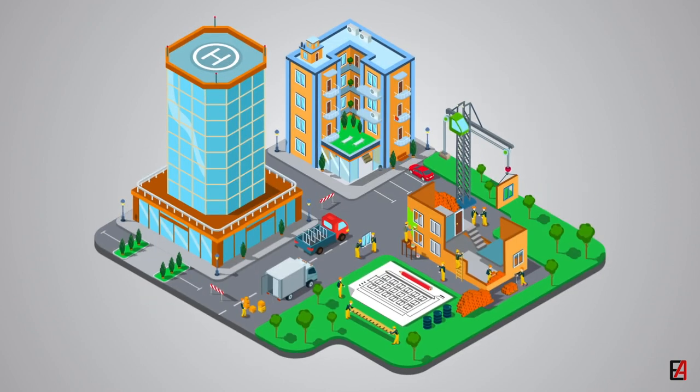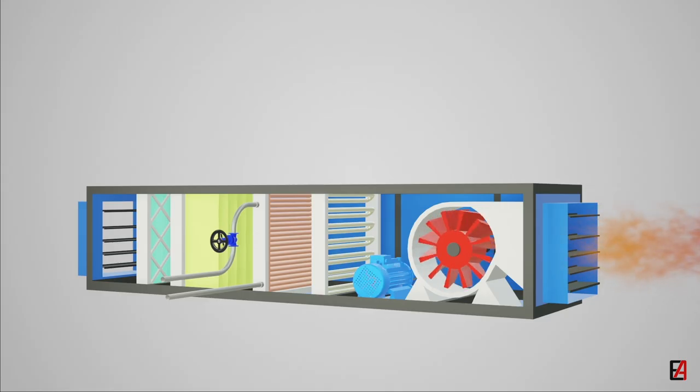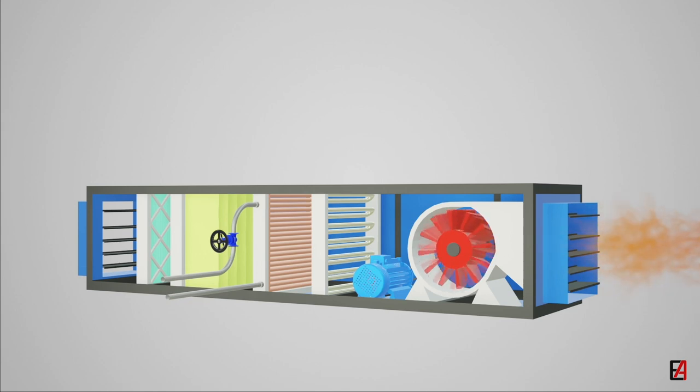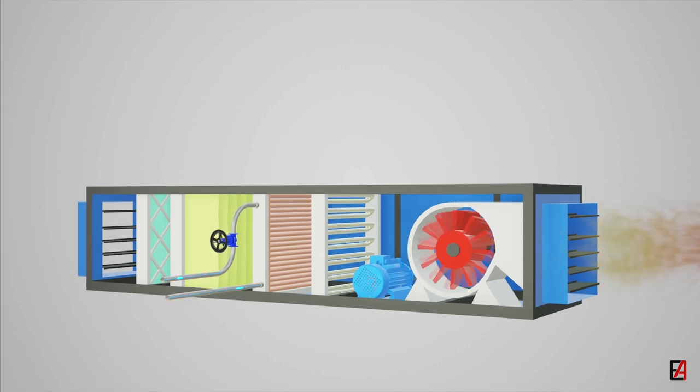In domestic applications, automatic control systems are used in heating, ventilation, and air conditioning systems to maintain the desired temperature and humidity of modern homes for the comfort of building occupants.